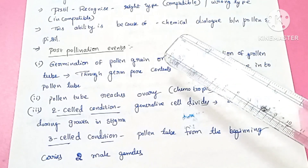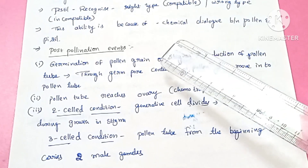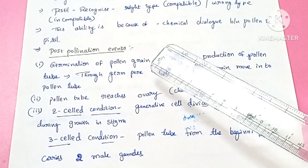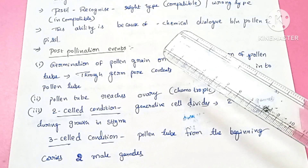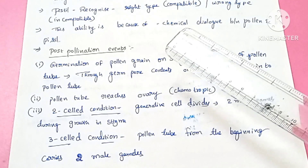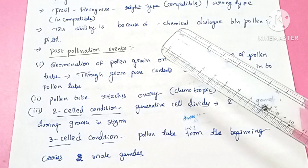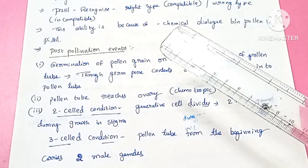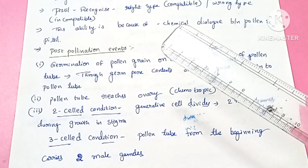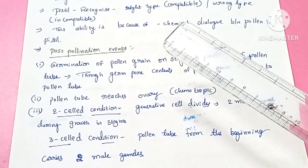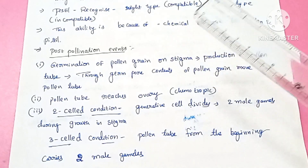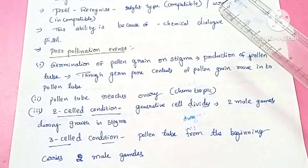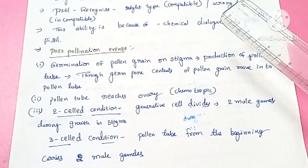In this video we are going to study about post-pollination events. After pollination, the pollen grain enters into the pistil and some events occur in the pistil — those events are called post-pollination events.